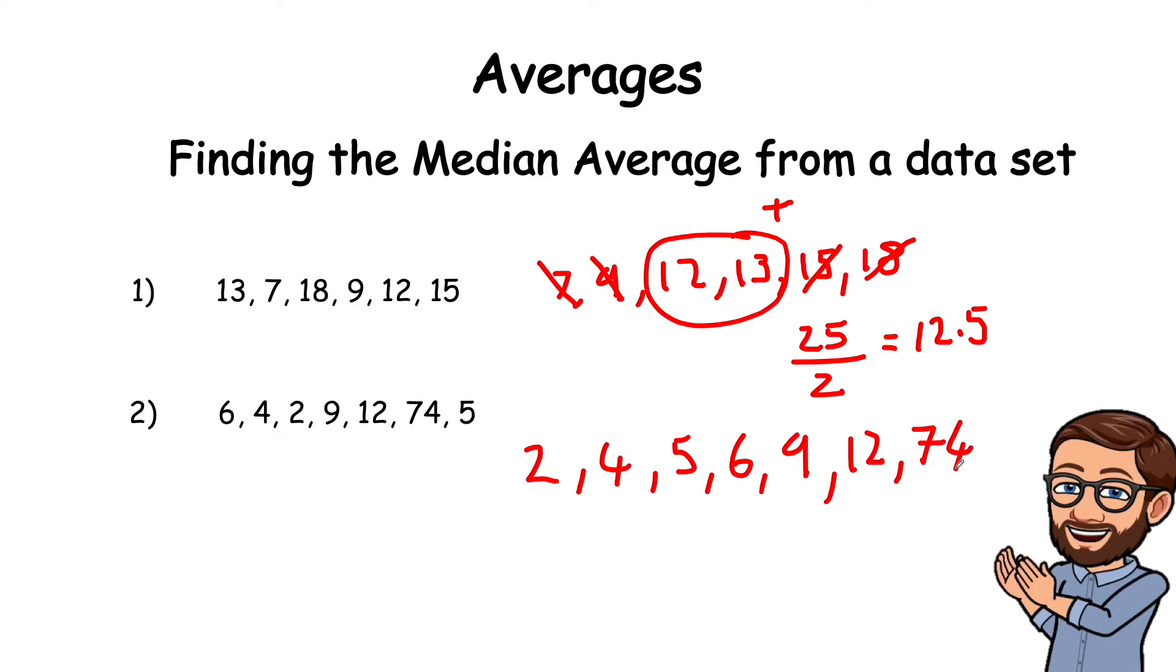That's a big number there. Now I'll do the same way to find our middle number, just cross off each end like this. Ah, we have just one number in the middle, which is 6, so the median for this data set is 6.